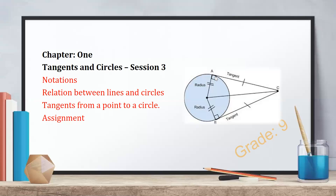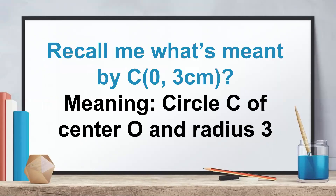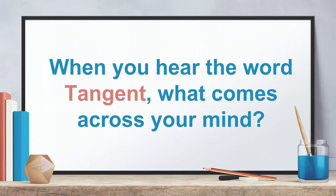As you see here, CA is a tangent, OA is a radius, and A is the point of tangency. B is also a point of tangency. First of all, we have to recall what is meant by C(O, 3cm). By definition, C(O, 3cm) means C is a circle of center O and radius 3 centimeters.